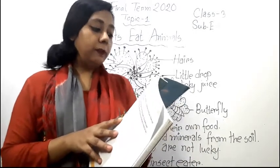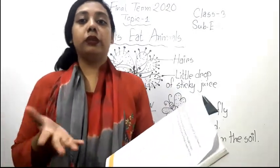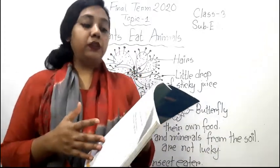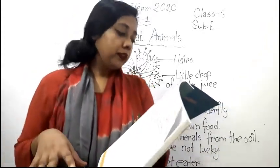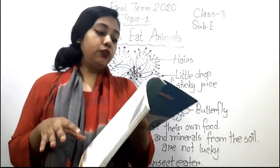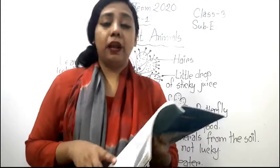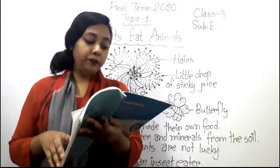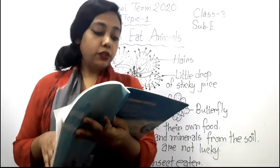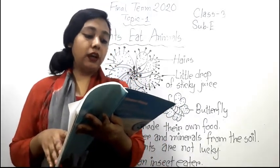Plants can easily make their own food — as we all know, plants make their own food. They get water and minerals from the soil, and the leaves use this to make food for the plant. But some plants are not lucky; they live in places where the soil is bad, so their leaves cannot make food like other plants.